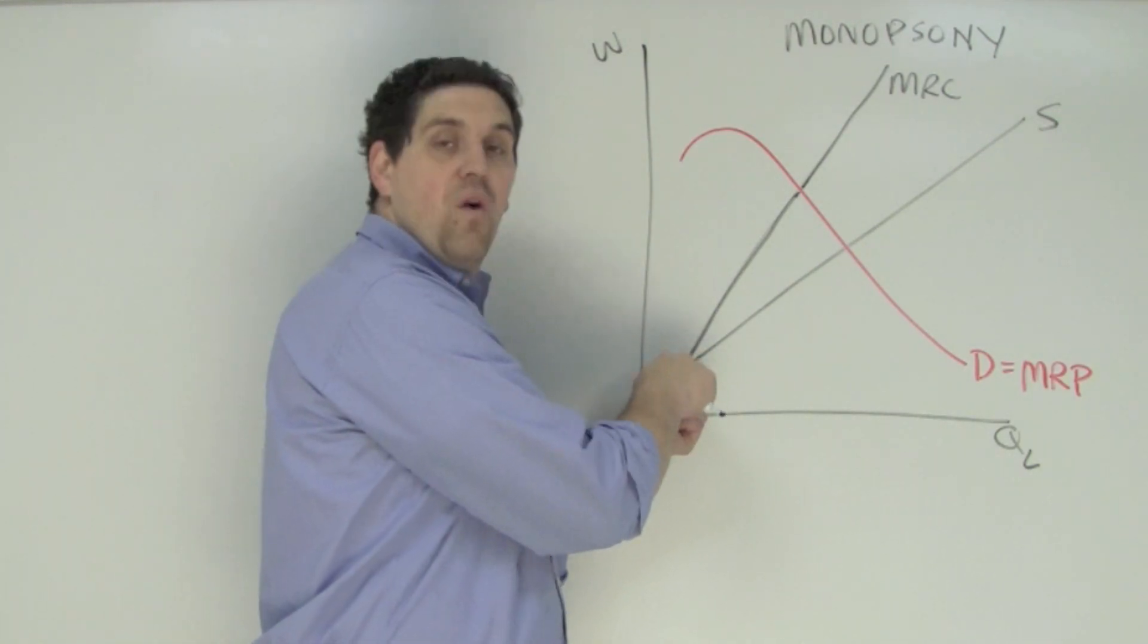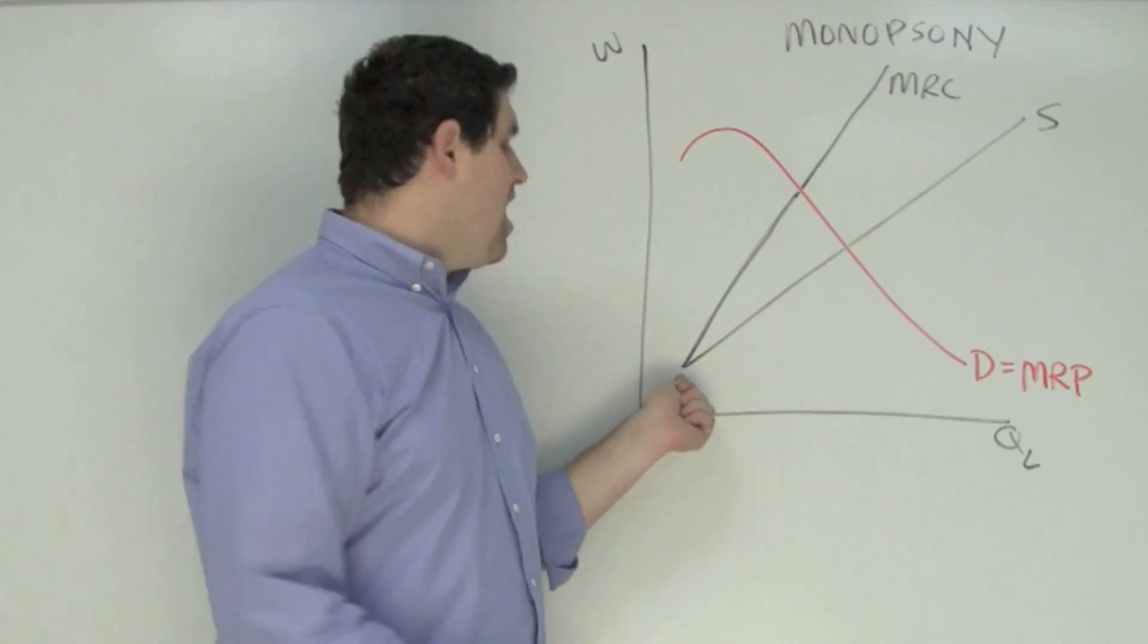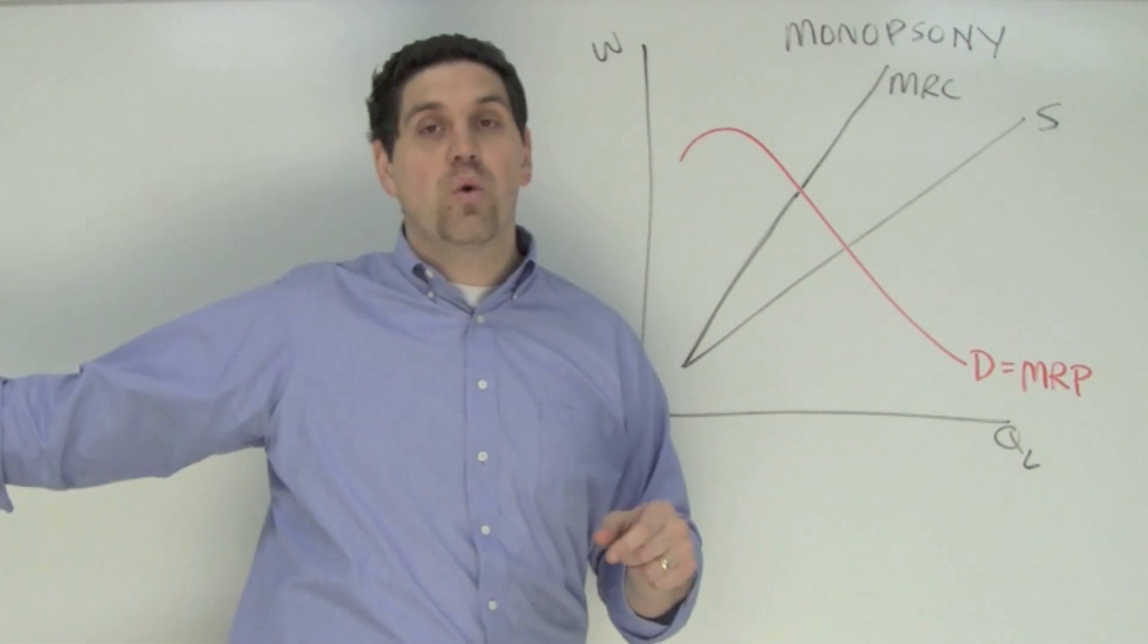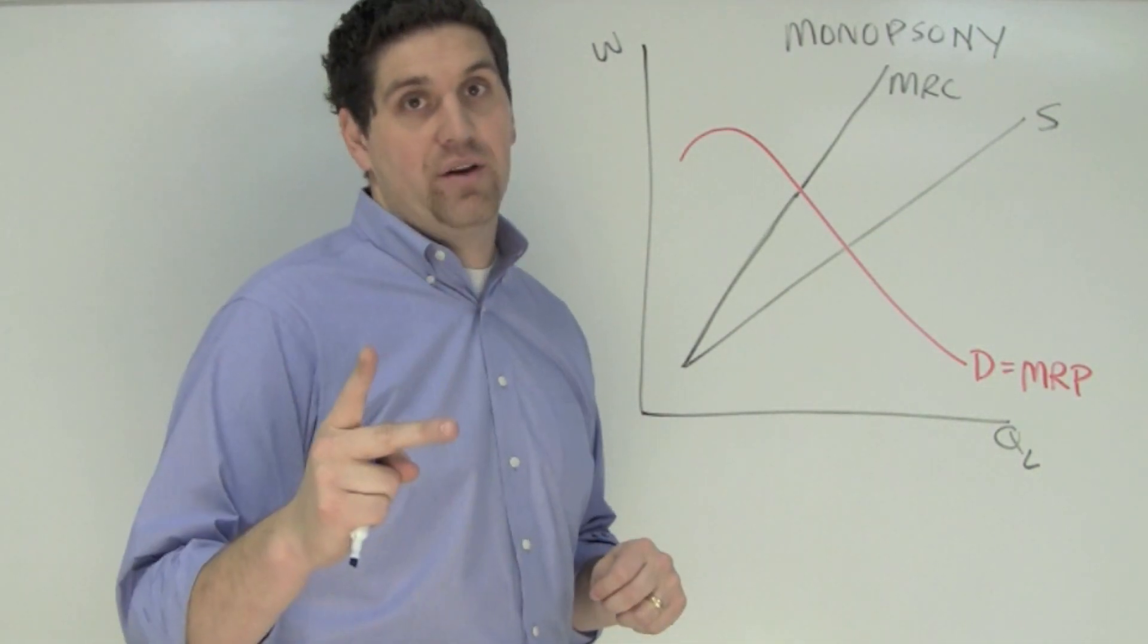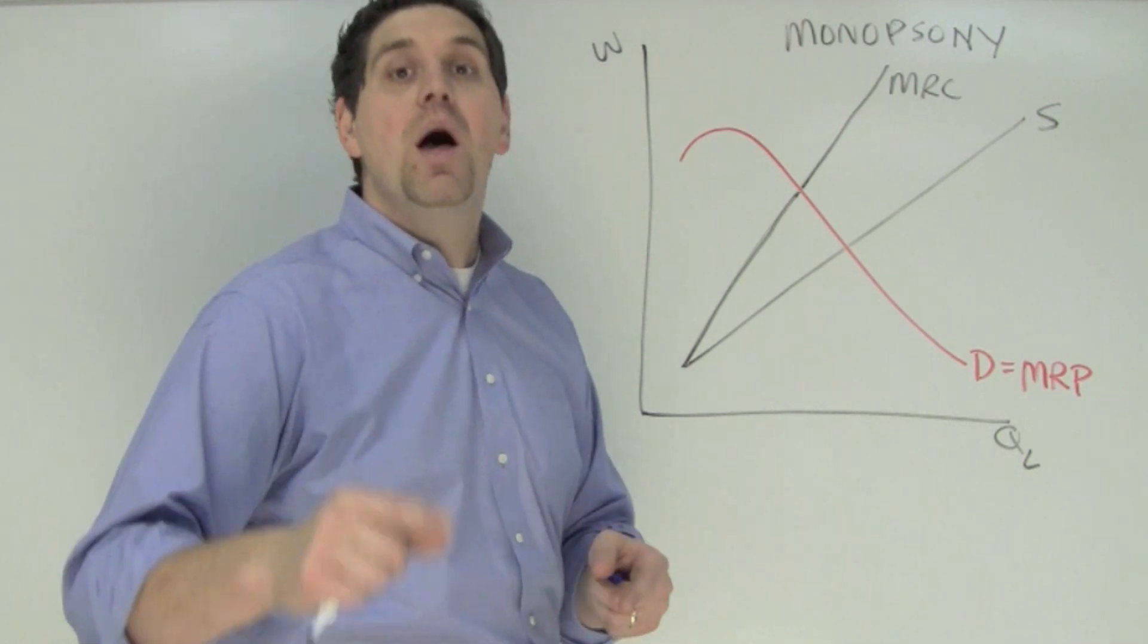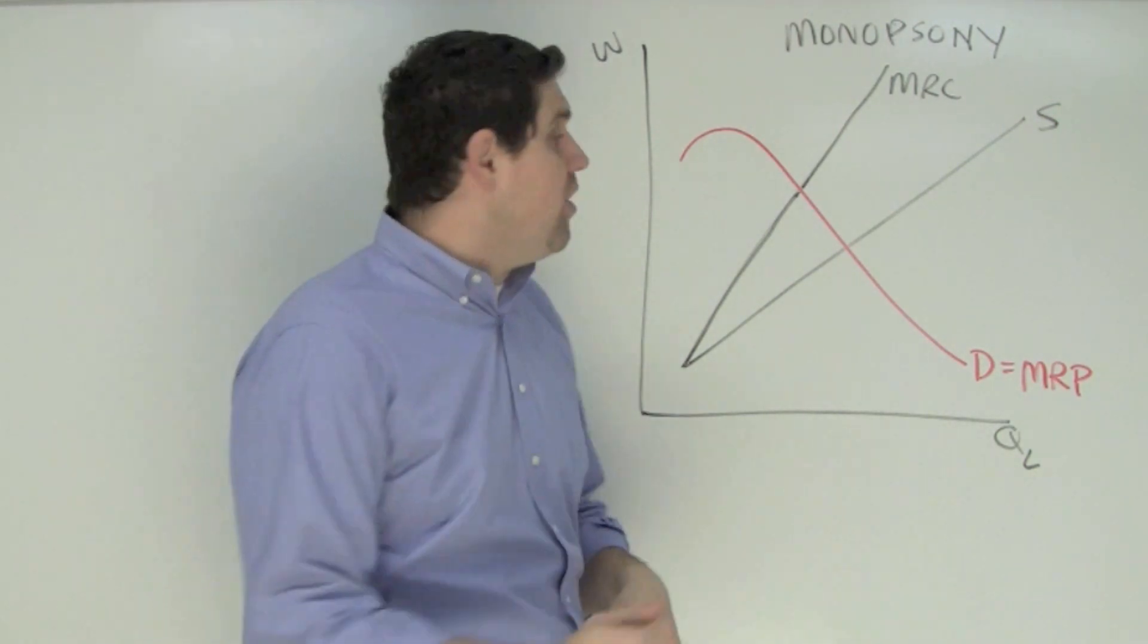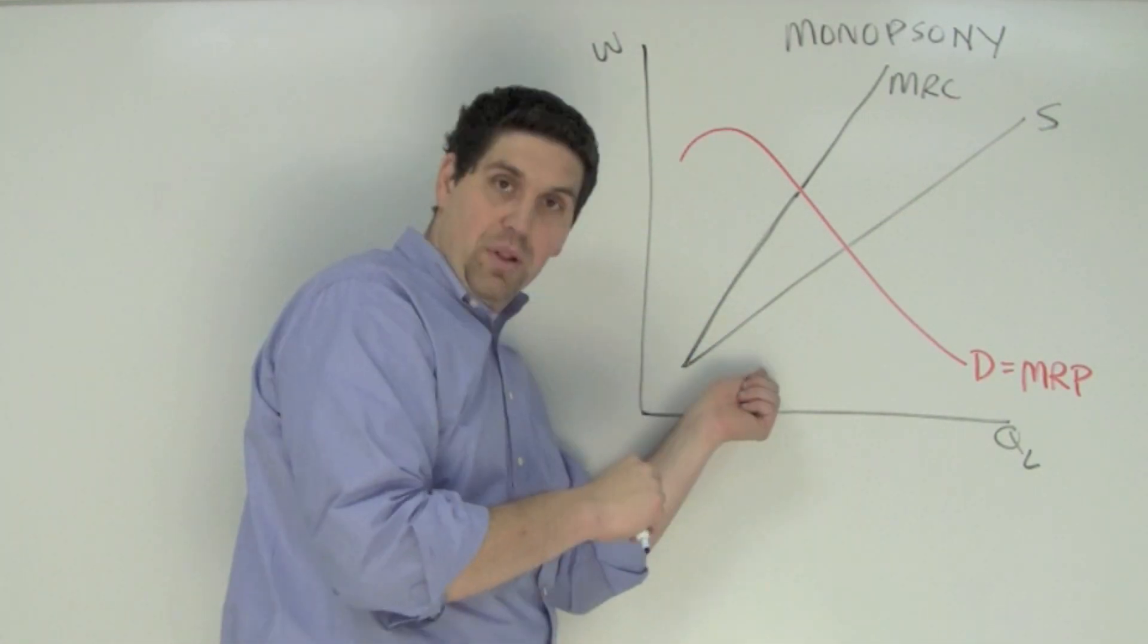When they're hiring one worker for $1, the additional cost of that worker is that $1 wage. However, if I want to hire a second worker for $2, I can't keep paying the first worker $1 anymore and the next worker $2. I got to pay both of them $2. So the additional cost of that second worker is the $2 I have to pay to get him plus another dollar on the previous worker I can only have paid $1. So the marginal resource cost of each unit is greater than the wage that they're willing to work for, the supply.